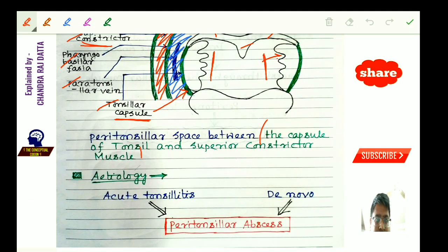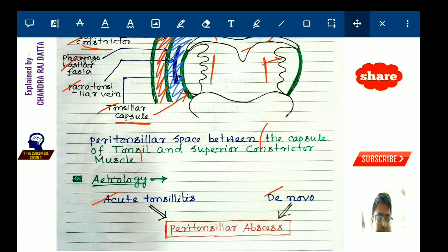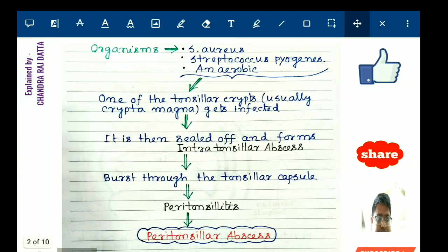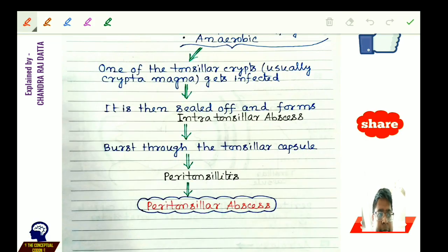Coming to the etiology of peritonsillar abscess, there are two scenarios: it can follow an attack of acute tonsillitis, or it can occur de novo in a patient with no history of acute tonsillitis. Acute tonsillitis usually occurs in children, but peritonsillar abscess is more common in adults. The organisms responsible are Staphylococcus, Streptococcus, and sometimes anaerobic organisms.